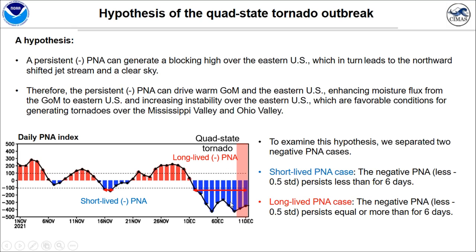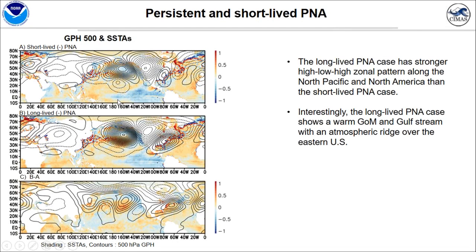To examine this hypothesis, we separate two negative PNA cases: the short-lived PNA case, where negative PNA persists less than 6 days, and the long-lived PNA case, where persistence is equal to or longer than 6 days. The quad-state tornado outbreak is one of the largest and abnormal long-lived negative PNA cases.